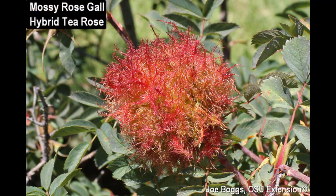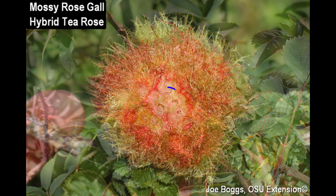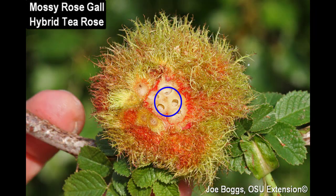Here, you can see a mossy rose gall produced by a rose to contain the larva of a stingless wasp that laid eggs in the leaf buds during the spring.